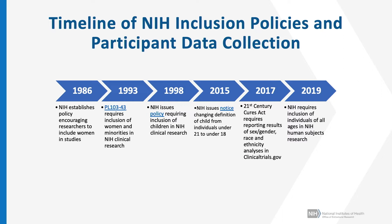Beginning in 1998, NIH issued a policy requiring inclusion of children in NIH clinical research. In 2015, NIH revised the definition of a child. Previously, a child was considered an individual under the age of 21. Starting in 2015, that definition changed to an individual under 18, to better align with the age of consent to research in most states.